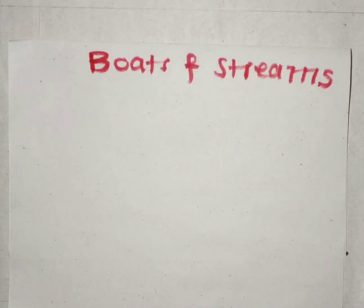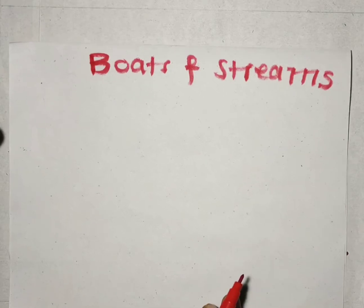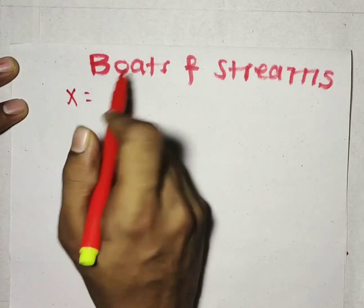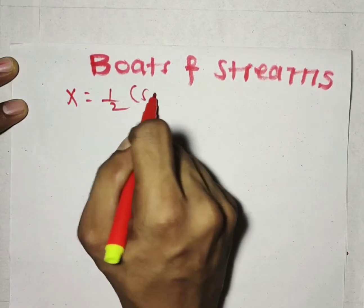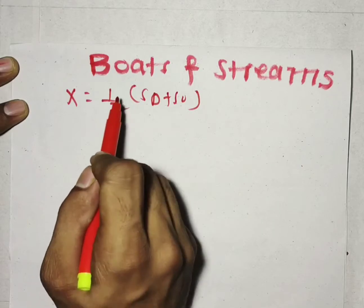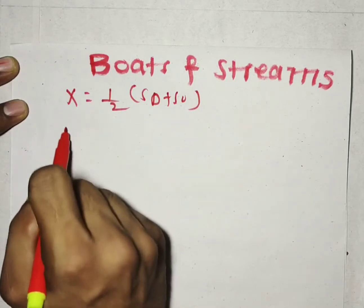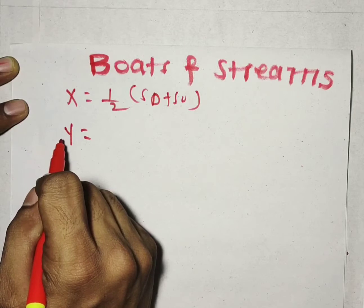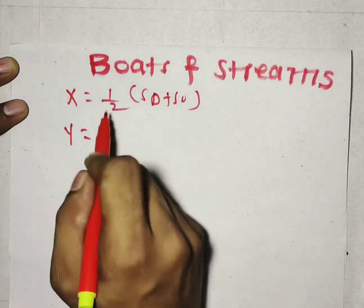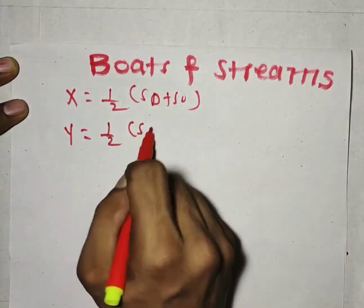In this video we have to solve more questions on boats and streams — some different kinds of patterns based on boats and streams. We know that x is the speed of the boat in still water, and the formula is x = 1/2 of (SD + SU). To calculate y, which is the speed of the water or rate of stream, y = 1/2 of (SD - SU).